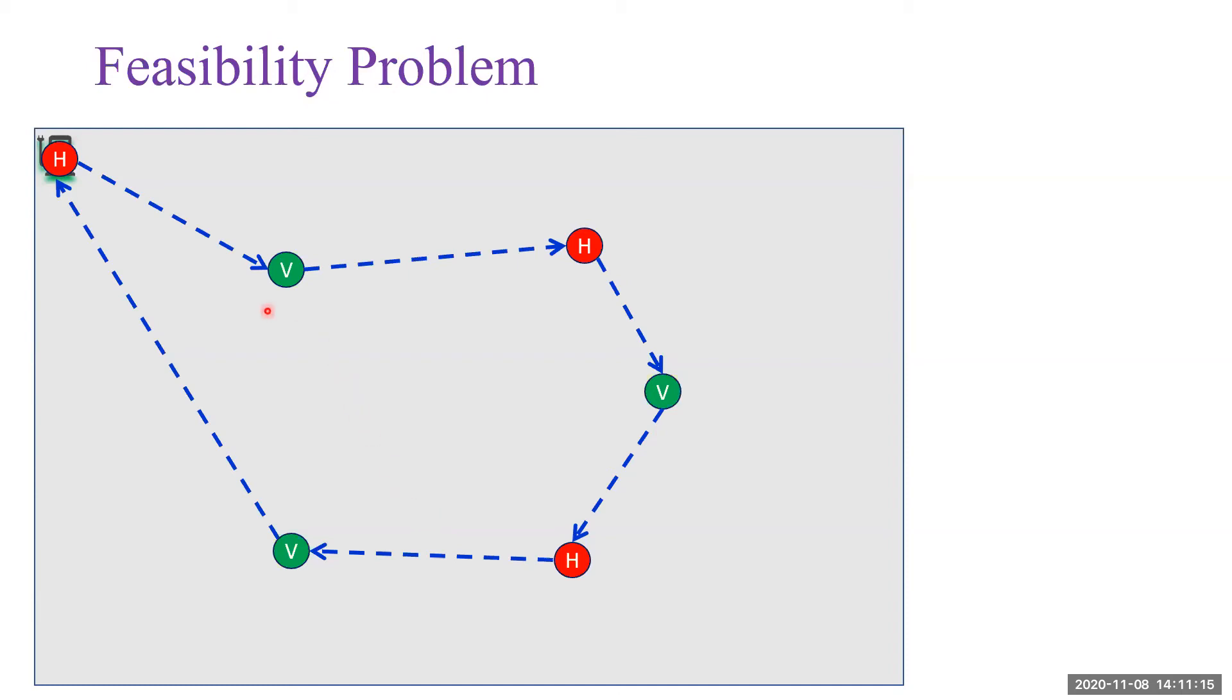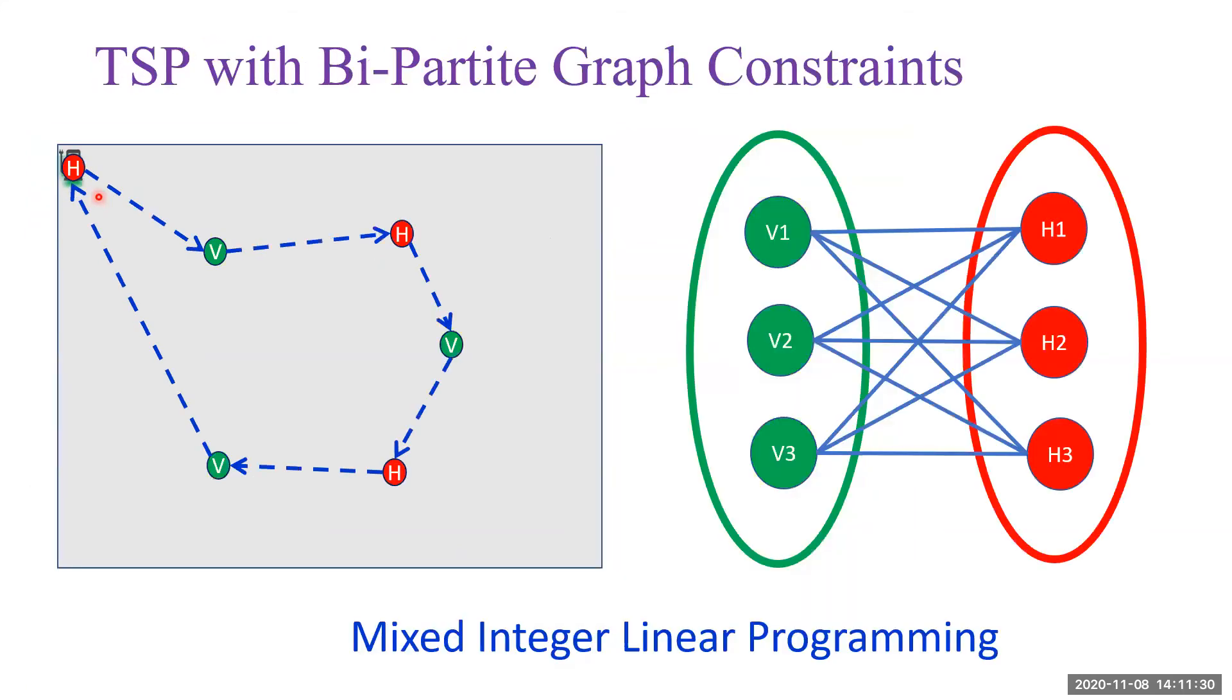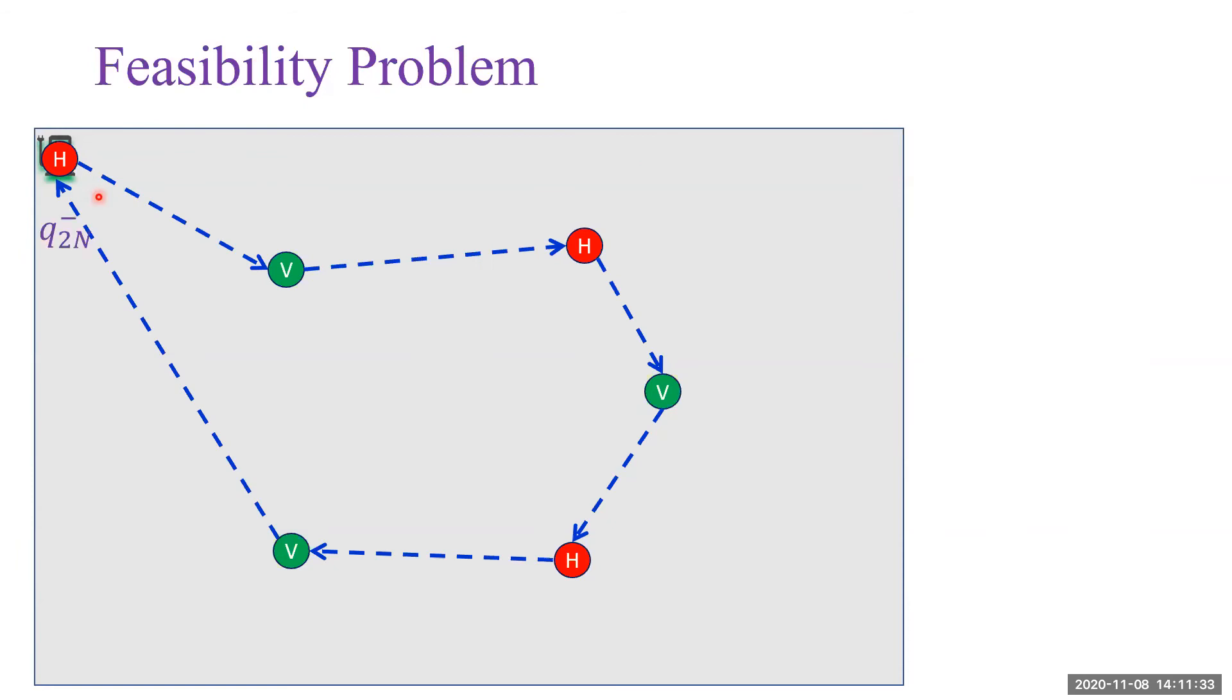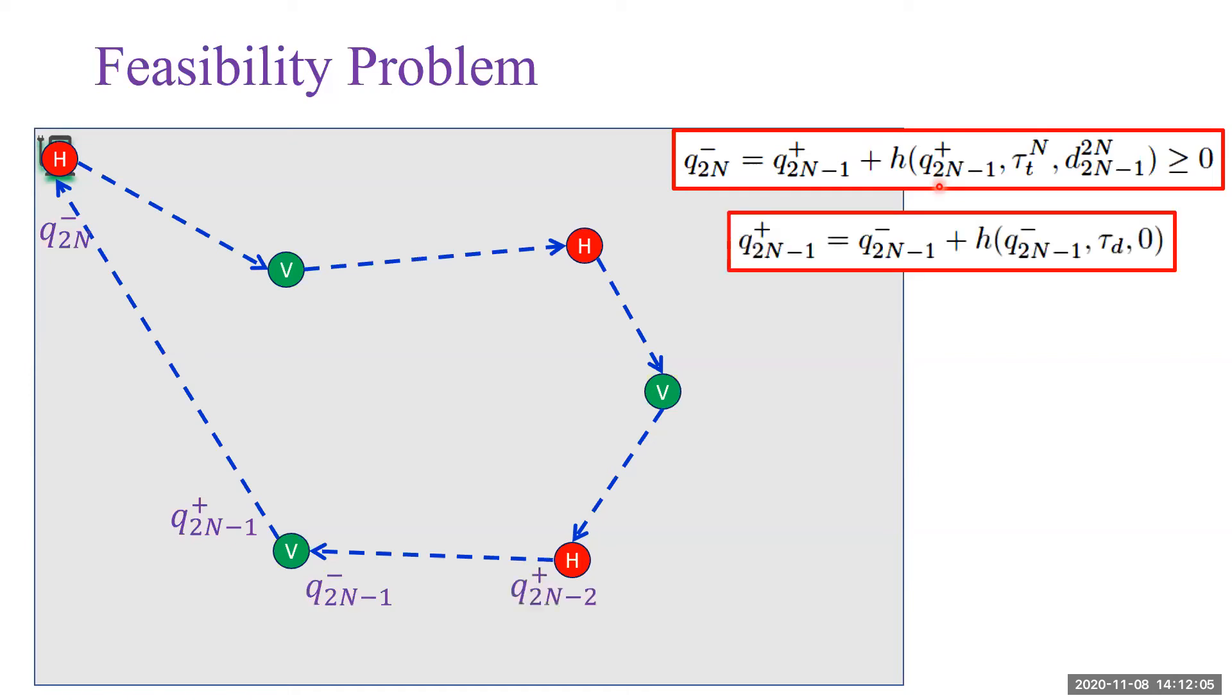Suppose this is the solution for the TSP problem. Then we can calculate the minimum energy requirement by doing it backwards. Let's assume this is the energy when agents arrive at the charging station. Then we can calculate the energy at this point using the energy cost. It depends on the distance between the two locations and the time it spends on the trip and its initial energy. Similarly, we can find all the energy requirements.